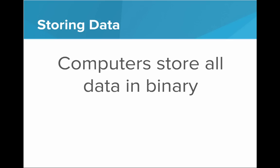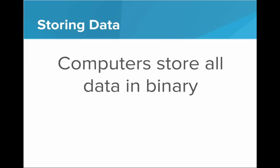Now, why is binary important to computers? Why is this relevant? Well, it turns out that at the base of everything, at the very core level, computers are storing all data in binary. For example, if we look at this code, storing a character, if I have the line char x equals capital A, in our heads, we are thinking about the variable x holding the value A. And that's totally fine. We can think of it that way when we're programming.